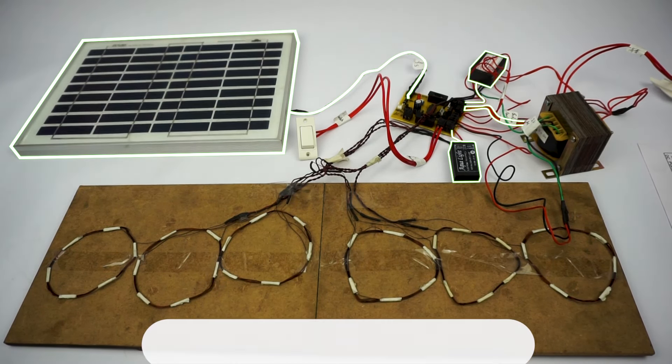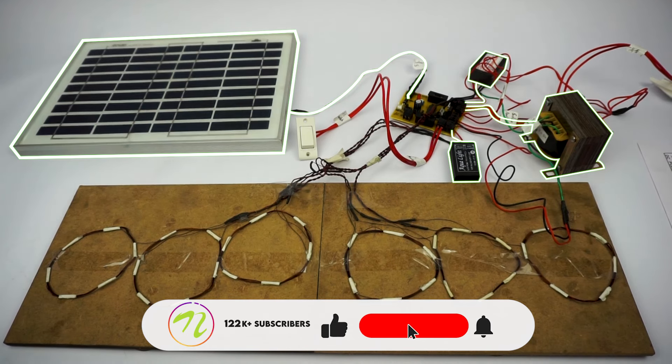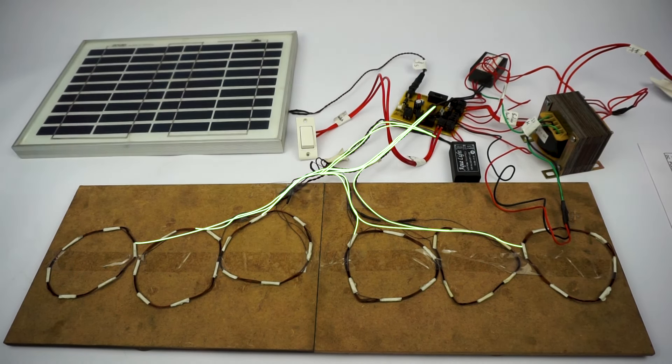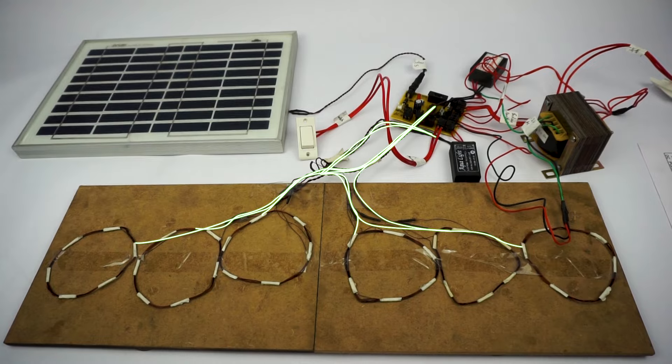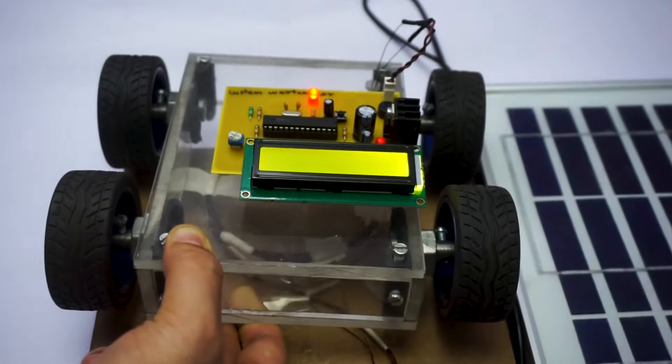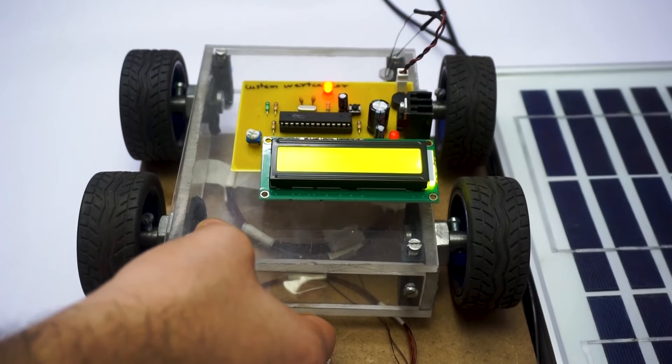The charge from the battery is converted to AC power using the transformer because for wireless transmission, we need the power to be AC power. After the power is transmitted from the coils on the road, it is received by the coil underneath the vehicle and this received power is again converted into DC so that it can be used to charge the vehicle battery.